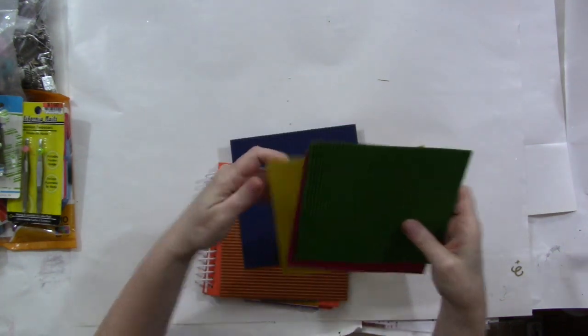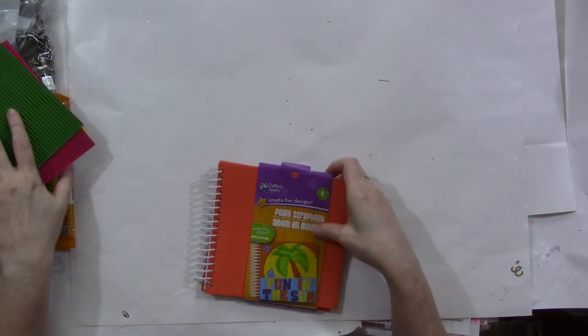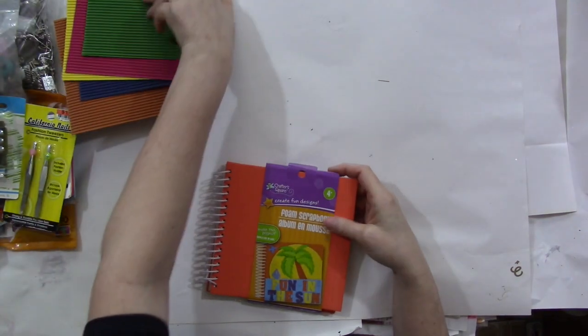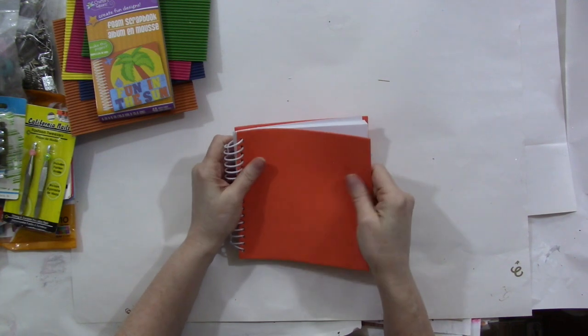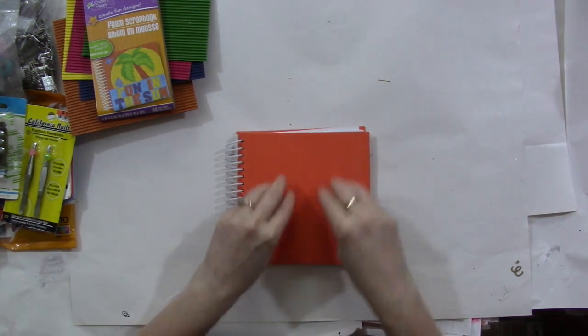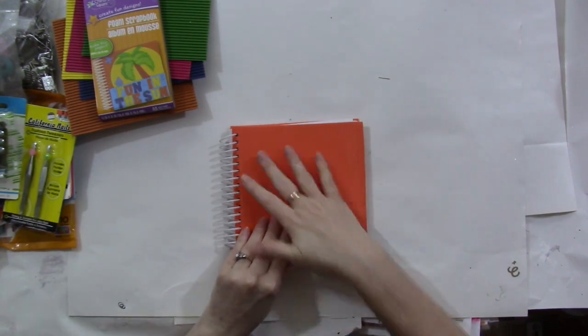A stencil and look at these corrugated papers in all these bright colors. Those are great. And a foam scrapbook. It's got like fun foam covers so you can heat it and then impress stuff in it to make texture. And then it's just this little journal. That's fun, I like that.